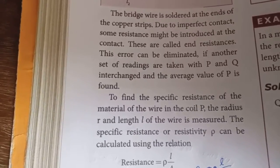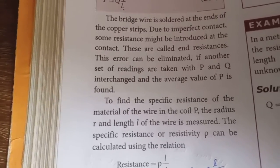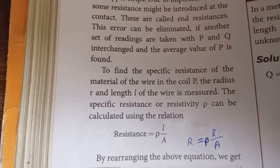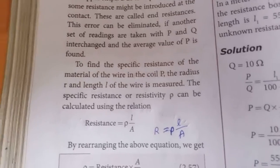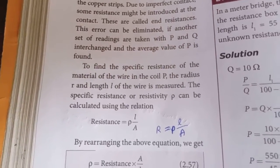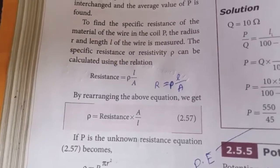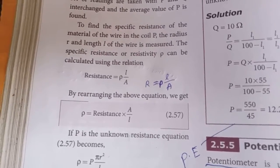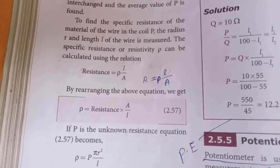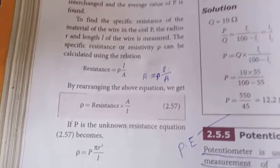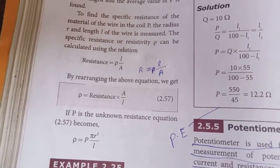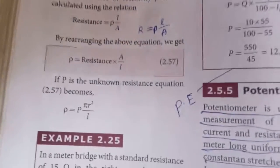We can also find the specific resistance of the material of the wire in coil P. The radius R and length L of the wire are measured. The resistivity rho is found using the formula: R = rho × L/A, rearranged to rho = R × πR²/L.